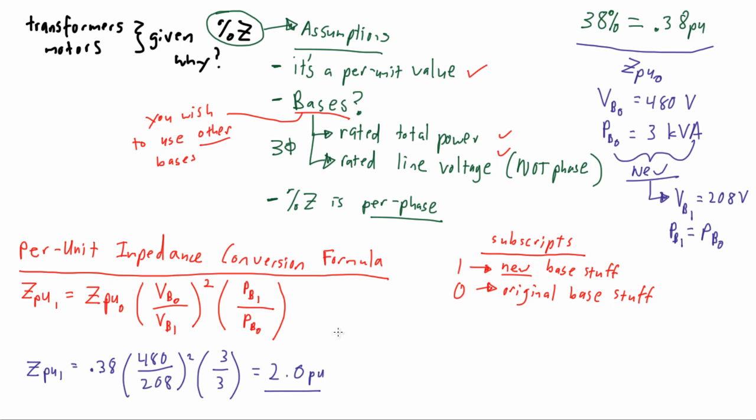So to analyze this formula simply, we've just filled in our variables. We have a 0.38 impedance per unit there. We have our 480 volts, which is our original voltage base, put over 208 volts, which is our new voltage base. We square that, and then we are not changing our power bases, so we can put the new over the original being the same. 3 over 3 obviously equals 1, which algebraically makes that whole parenthesis go away. And we can net out to a 2.0 pu.